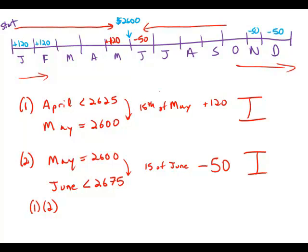The last seven months of the year, we're subtracting $50. And that does allow us to figure out the closing balance at the end of each month last year. So statement one and statement two together are sufficient. And the answer is C.